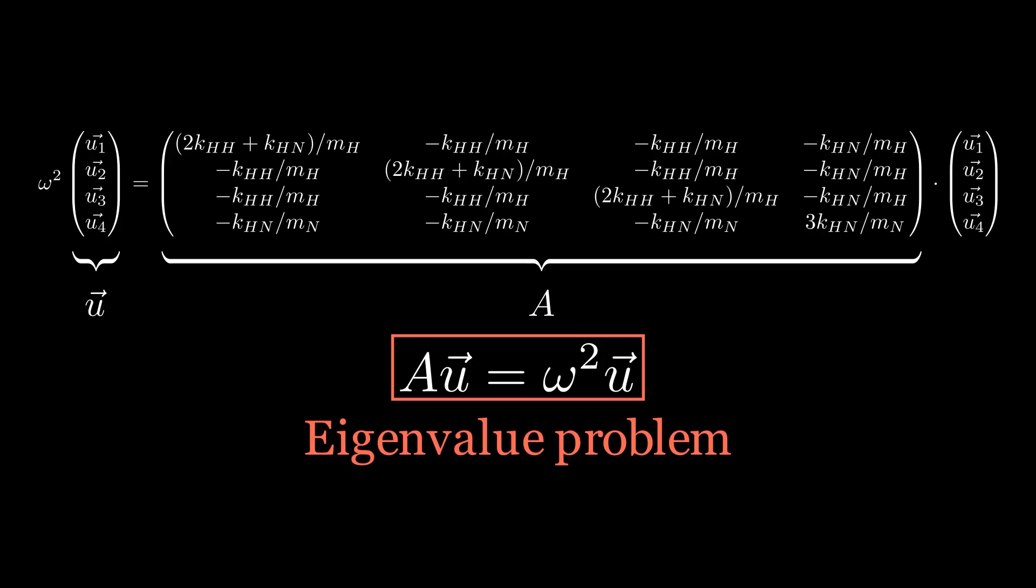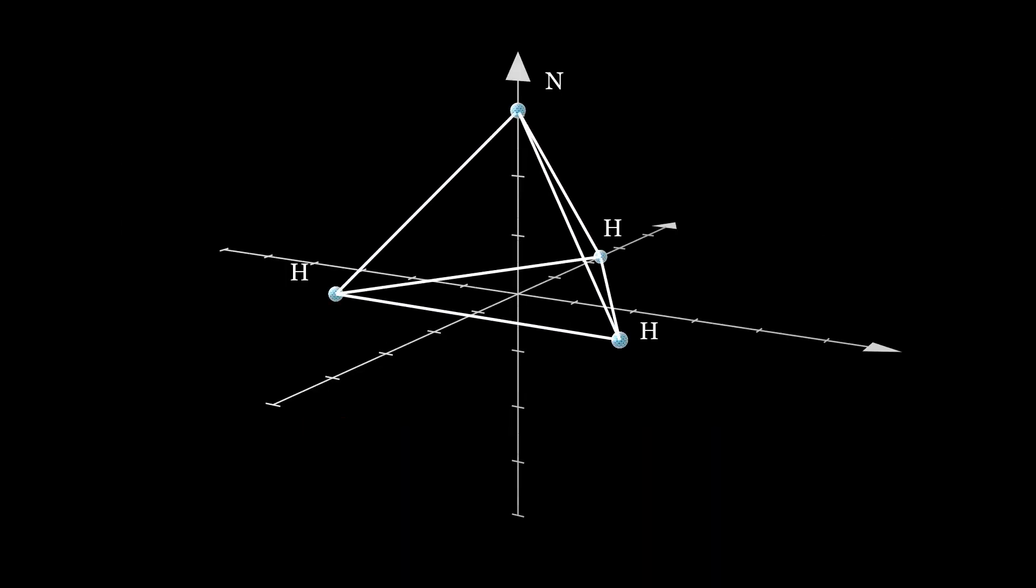Looking at the NH3 molecule, we see for example that a 120 degrees rotation about the z axis keeps the system invariant. What I mean is that the molecule configuration would stay the same, as the hydrogen atoms are indistinguishable.